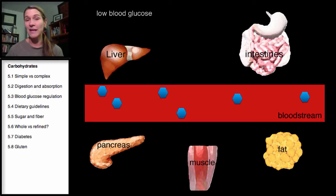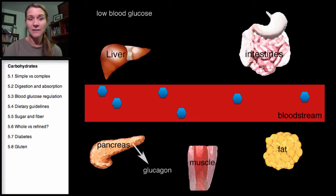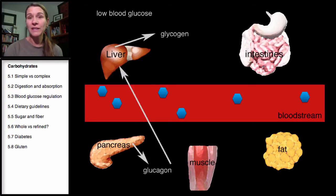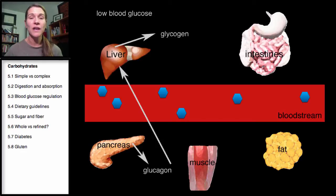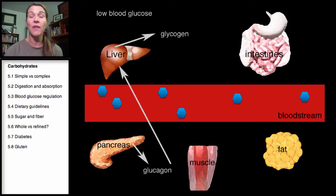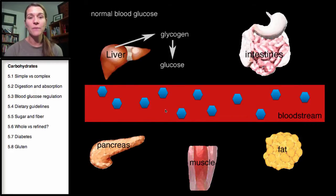Your body can respond to low blood sugar — you don't necessarily always have to eat right away, because the pancreas is going to release glucagon. Glucagon is a hormone that tells the liver to release glycogen. Glycogen is our storage form of glucose, mainly stored in the liver and the muscle. The liver likes to share its glycogen; once released, it breaks down into glucose, which is then released into the bloodstream, bringing blood glucose levels back to normal.